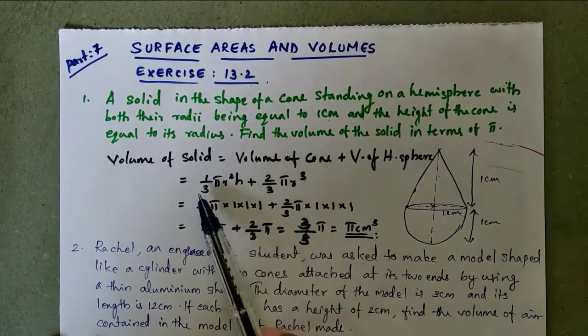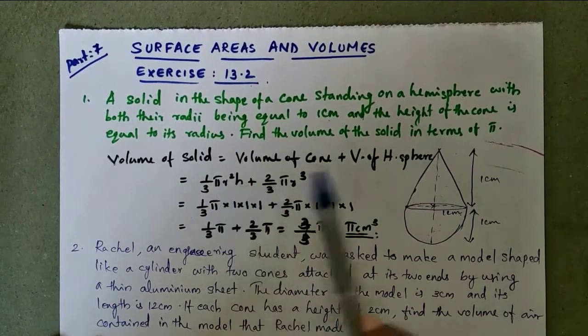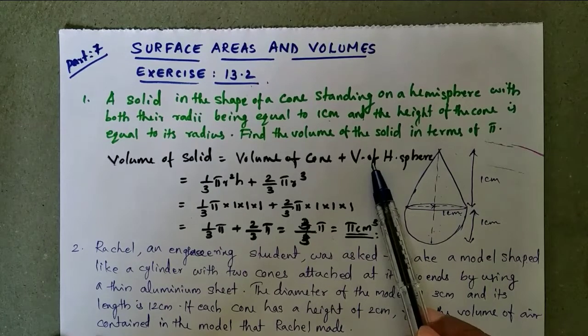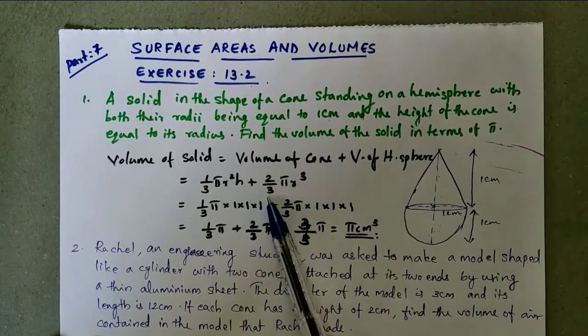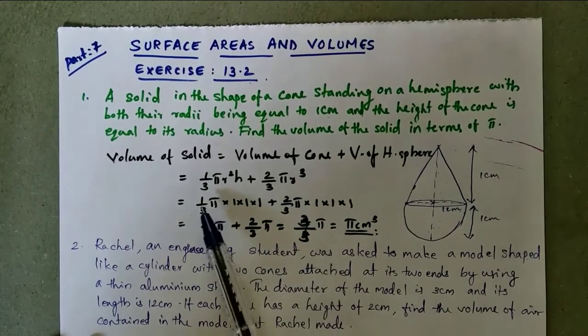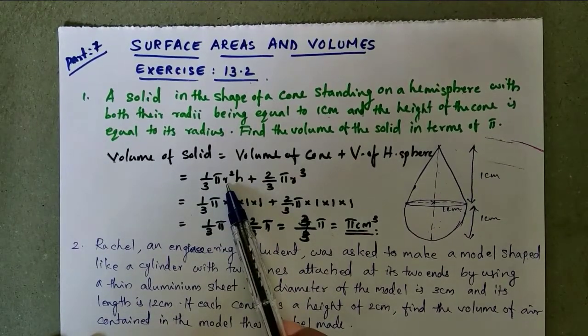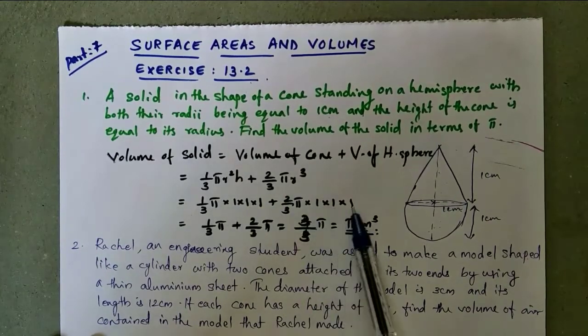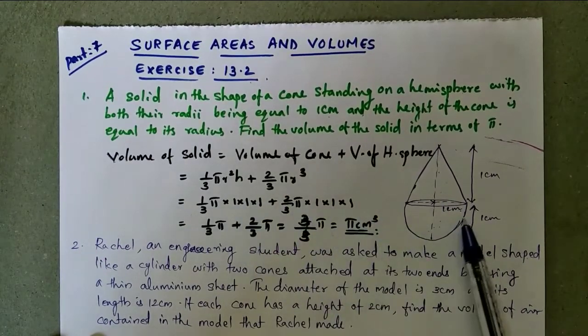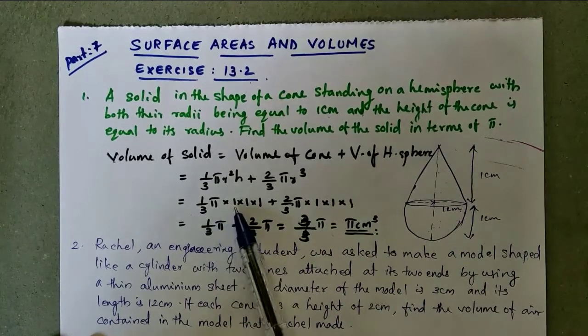We have volume of cone is 1/3 π r² h and we know the formula to find hemisphere volume is 2/3 π r³. Then substitute radius and h, one into one into one, and r³, one into one into one.